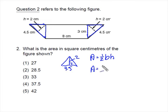So the area of that triangle is one-half, a base of 4.5, and a height of 2 centimeters, making it 4.5 centimeters squared.